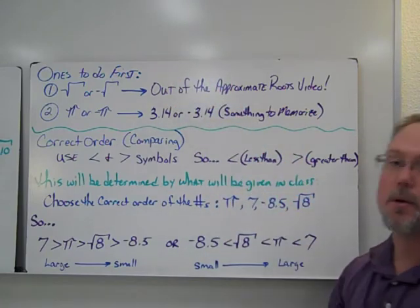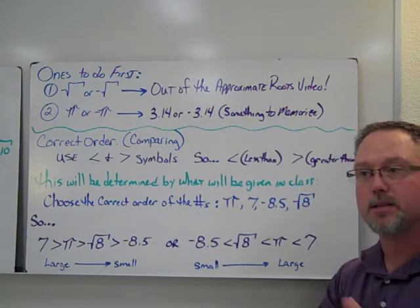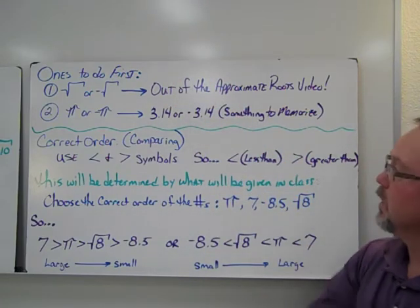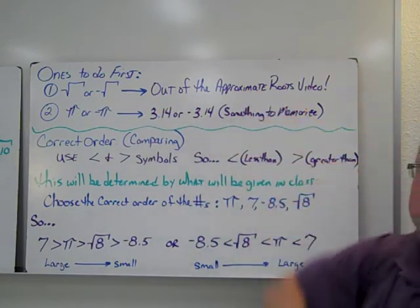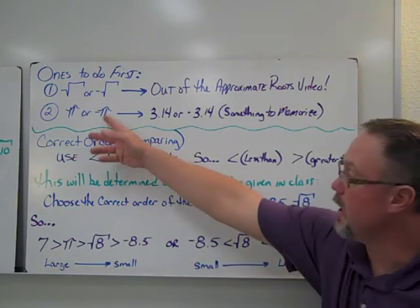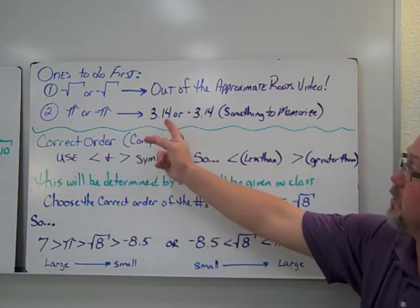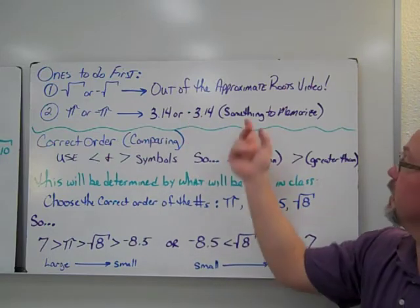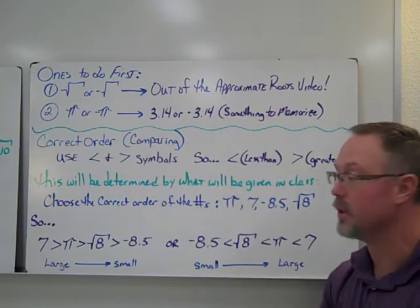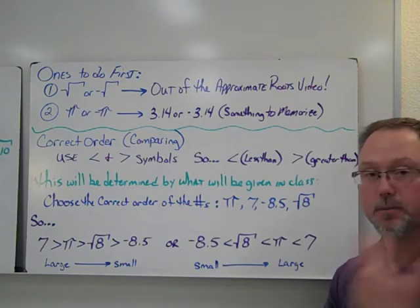So the ones that I would probably do first just to get them out of the way because they'll take you the longest or to get that done is the square root or the negative square roots. Again, this is out of the approximate root section. The pi or negative pi, which we already should know as 3.14 or negative 3.14. And again, it's something to memorize. You'll need to know that later on. And it's something that you got last year.